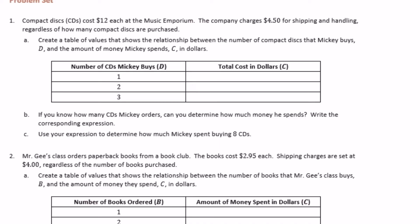Part A: Create a table of values that shows the relationship between the number of compact discs that Mickey buys, D, and the amount of money Mickey spends, C, in dollars. If he buys one CD, they each cost $12, and then he's going to have to pay $4.50 for shipping. So it's 12 times 1, which is 12, plus $4.50 — that would make this $16.50 for one CD.